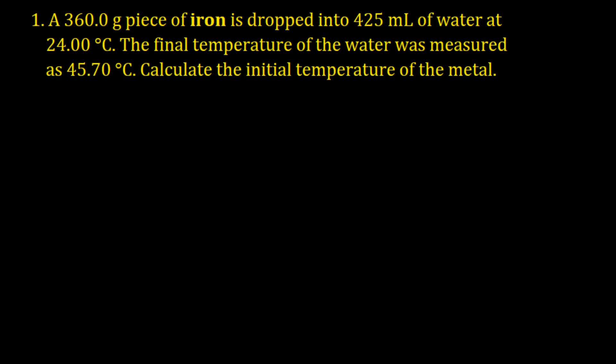Now let's start with this first one. A 360.0 gram piece of iron is dropped into 425 milliliters of water at 24.00 degrees Celsius. The final temperature of the water was measured as 45.70 degrees Celsius. Calculate the initial temperature of the metal.